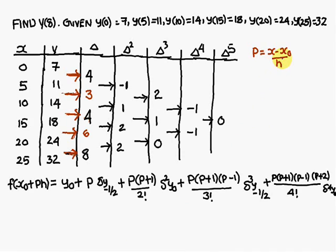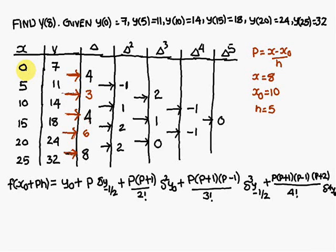The value of P is found using P = (x − x₀)/h. Here x = 8. We choose x₀ = 10 because 8 lies between 5 and 10, but is closer to 10. The step size h = 5 because the difference between x values is 5 throughout. Therefore P = (8 − 10)/5 = −0.4. We also need y₀, Δy₋₁/₂, Δ²y₀, Δ³y₋₁/₂, and Δ⁴y₀.